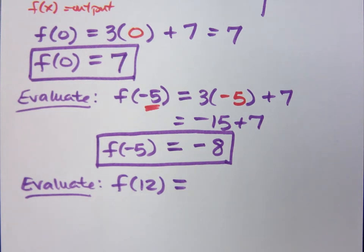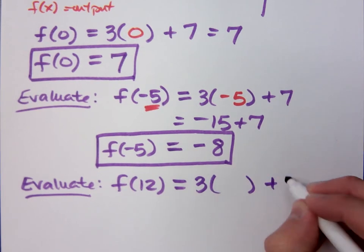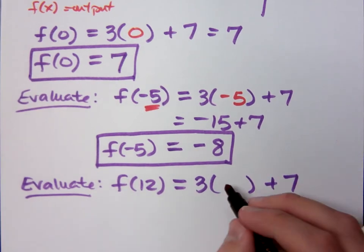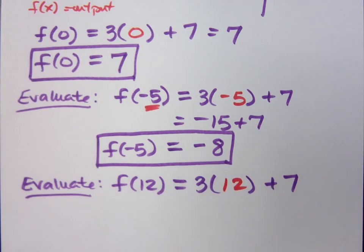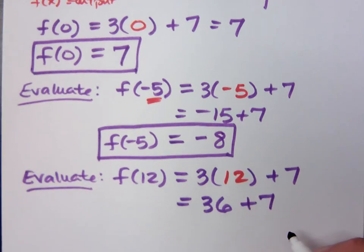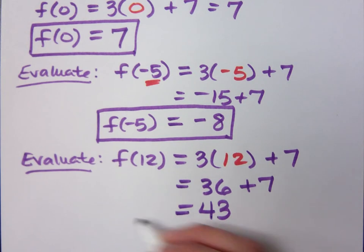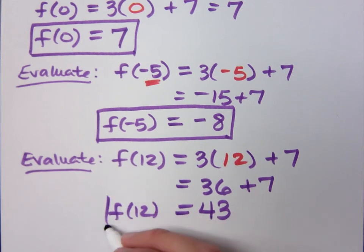If I do f of 12, what does that mean? All we're doing is changing what we plug in here and we're just doing the math. This isn't rocket science here. It's not rock science, right? So I get my function f evaluated at 12 equals 43. Do you all agree?